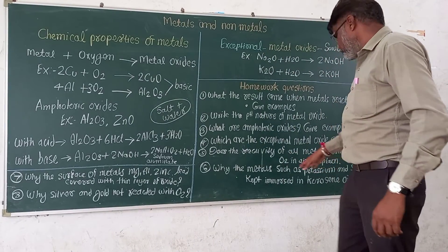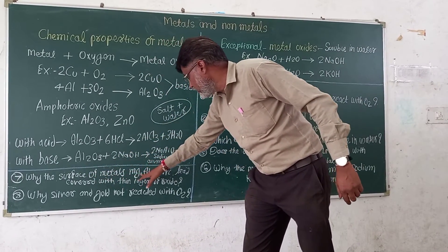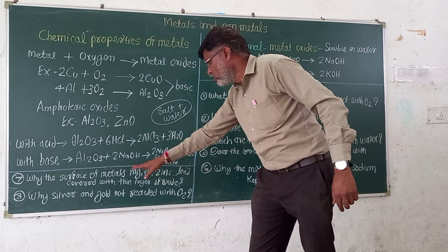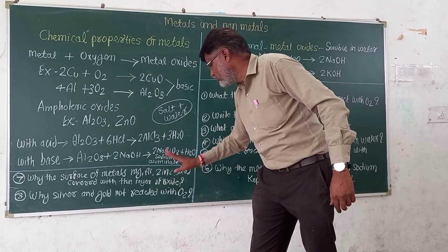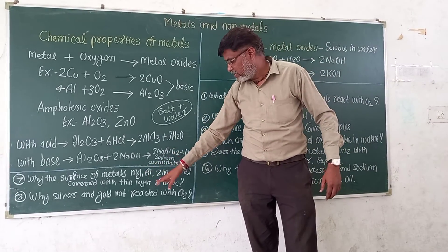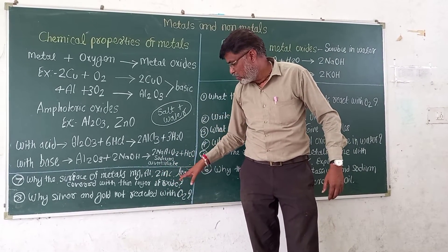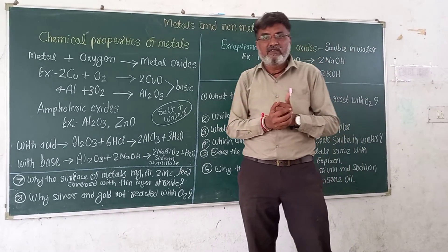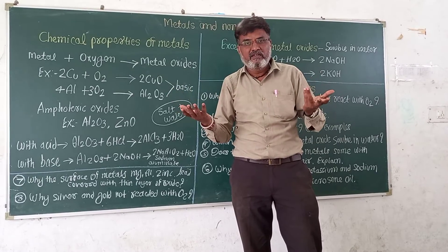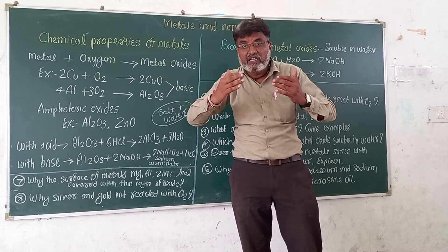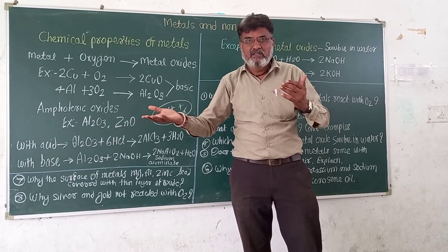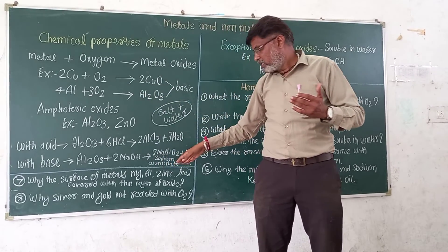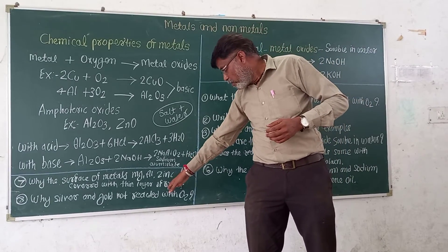Why are the surfaces of metals like magnesium, aluminium, zinc, and lead covered with a thin layer of oxide? These metals get covered with a thin oxide layer to prevent further oxidation — to prevent more oxidation. So they get covered with metal oxide, which protects them.